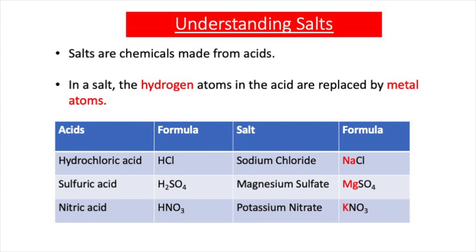Salts are chemicals made from acids, and in a salt the hydrogen atoms in the acid are replaced by metal atoms. For example, hydrochloric acid has the chemical formula HCl. Sodium chloride is a salt formed from hydrochloric acid and has the formula NaCl — the hydrogen in the acid has been replaced with sodium.